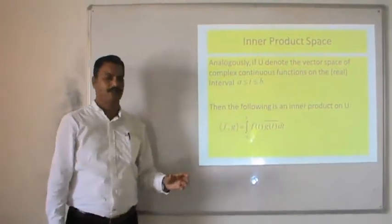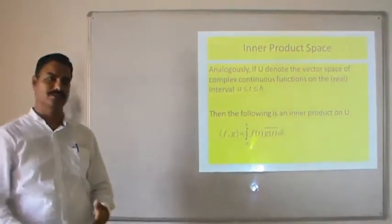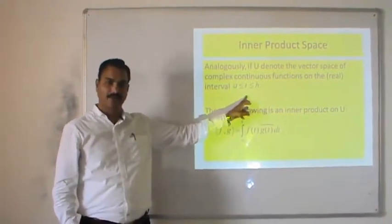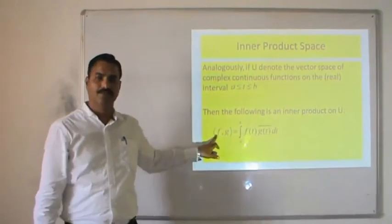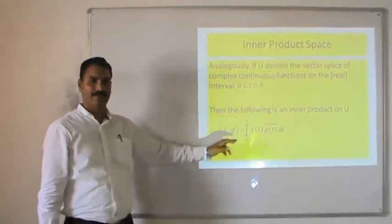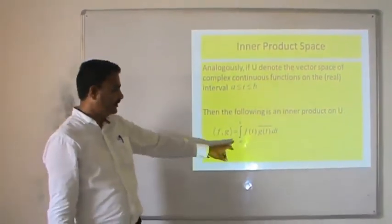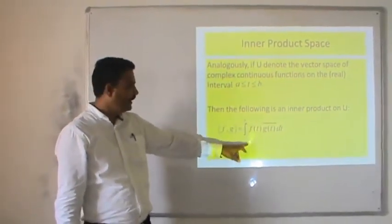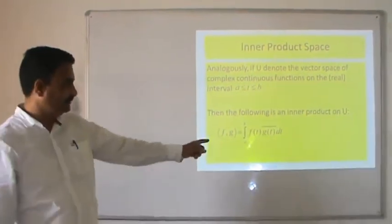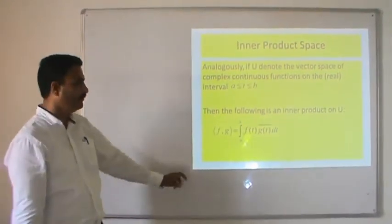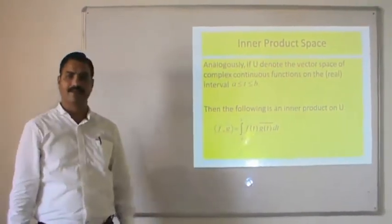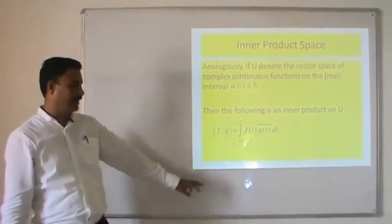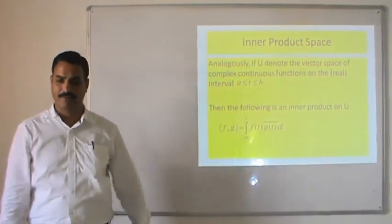Analogously, if U is a vector space of complex continuous functions with the same real interval a ≤ t ≤ b, then the inner product on U is defined as ⟨f, g⟩ = ∫ₐᵇ f(t)·ḡ(t) dt, where ḡ is the complex conjugate of g. We integrate the resulting function of t over [a, b], and the resulting scalar quantity belongs to our field.